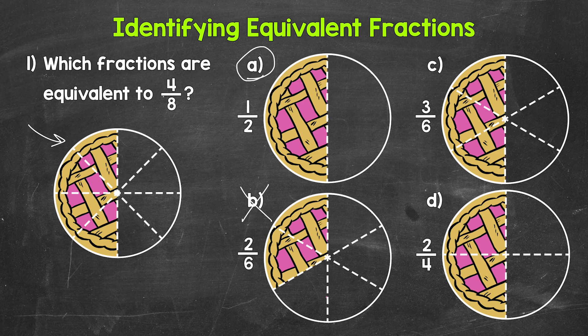Moving on to choice C, three sixths. Is this equivalent? Yes, we have the same amount of pie left. These fractions represent the same part of the whole pie. Four eighths and three sixths are equivalent fractions. And lastly, D, we have two fourths. This is the same amount as well, so two fourths is an equivalent fraction. Four eighths, one half, three sixths, and two fourths are all equivalent fractions — they represent the same amount of the whole pie, the same part of the whole pie.